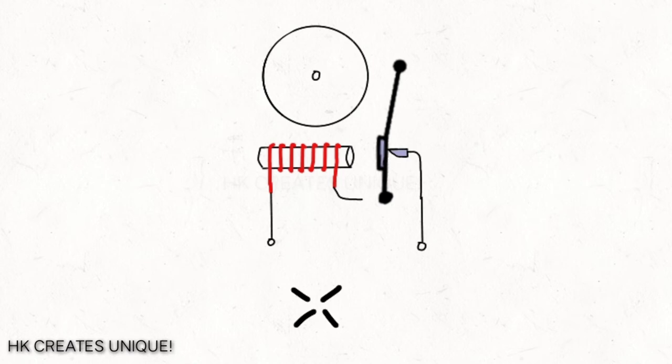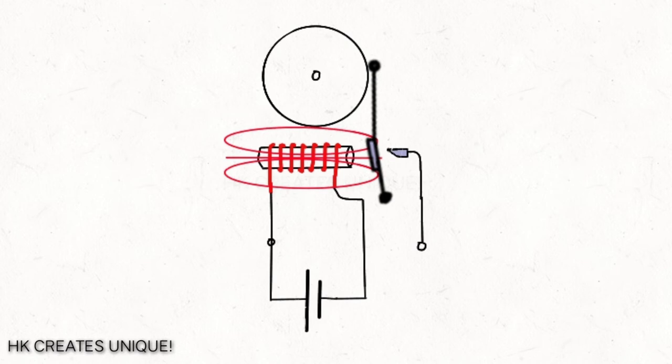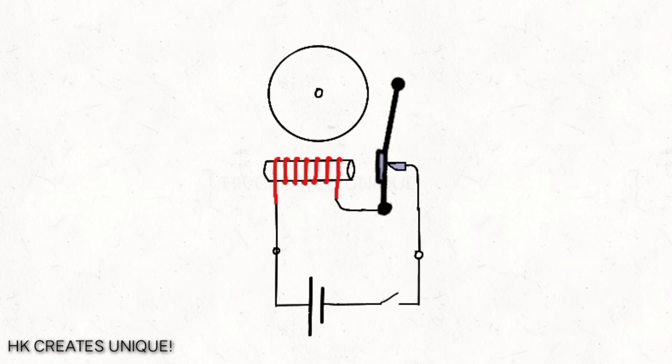But to strike the gong continuously, let's connect the electromagnet wires in the striker like this. What happens is that when power is supplied, the electromagnet produces a magnetic field and pulls the striker. But as we already discussed, when the striker is pulled, the circuit breaks.